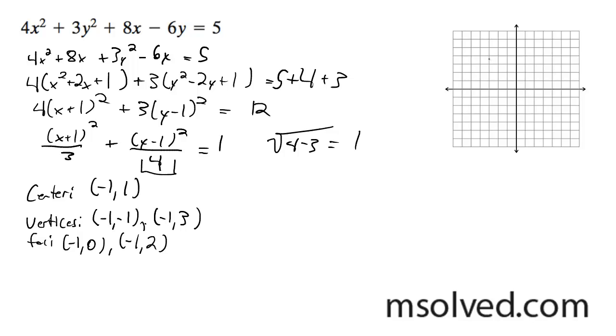So I can go ahead and graph this. Negative 1, 1, and foci is negative 1, 0, and then negative 1, 2.